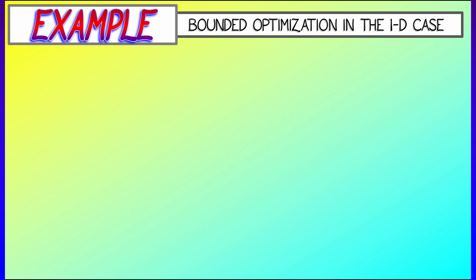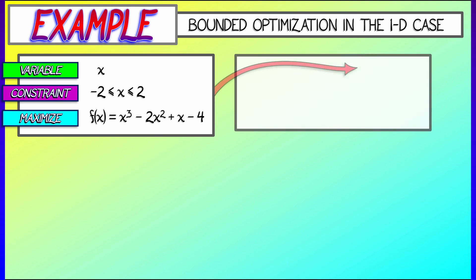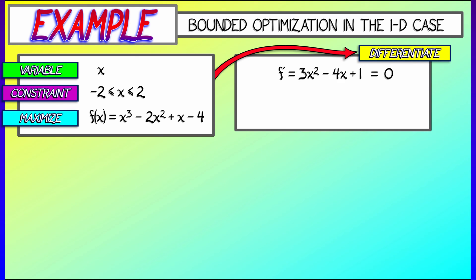Let's see an example where this happens. Let's say that you've got a variable x, and the bounds, the constraints, are that x has to be less than 2 in absolute value. Then, if you're given a function f of x equals x cubed minus 2x squared plus x minus 4, you want to maximize that function. You know what to do. I know what to do. Differentiate.